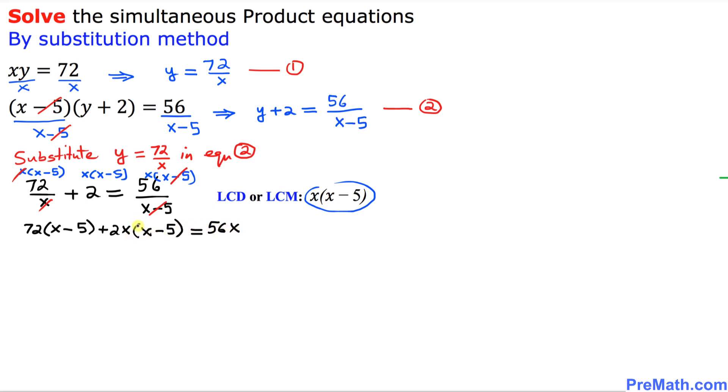So we no longer have a fraction. Let's go ahead and distribute these 72 times this one. That's going to become 72x minus 72 times 5 is minus 360. Likewise, we're going to distribute over here as well. That's going to become 2x squared minus 10x equal to 56x. Now, I am going to move this 56x on the left-hand side. So we're going to have 72x minus 360 plus 2x squared minus 10x. When we move this 56x on the left-hand side become 56 with a negative sign equal to 0.